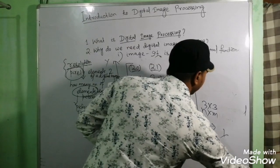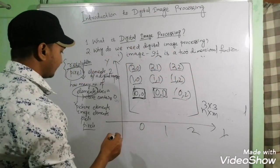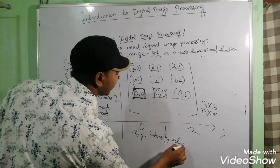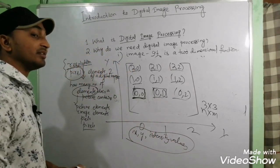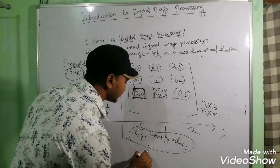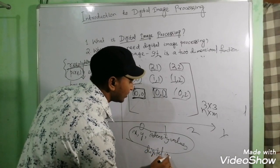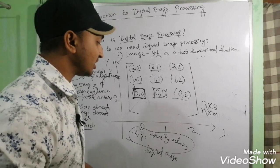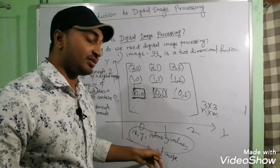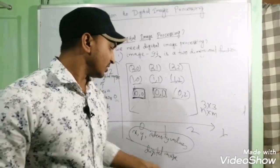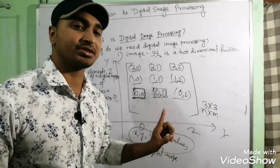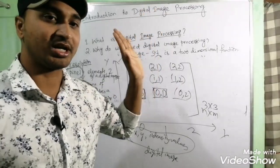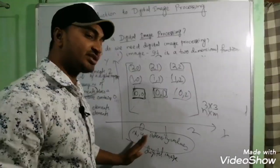Now we go to digital image. Whenever the values of x, y, and the intensity value are finite and discrete quantities, then in such cases the image is called a digital image. But if these values are continuous, then it is called an analog image. Images are basically of two types: digital and analog.